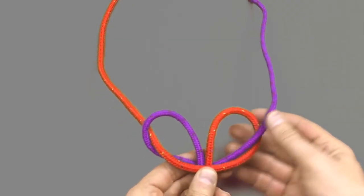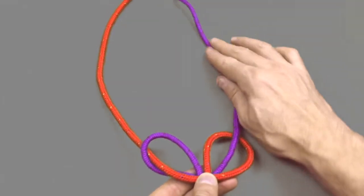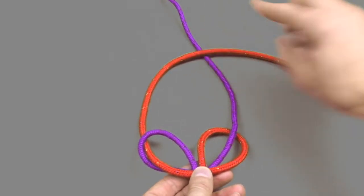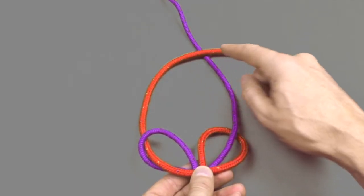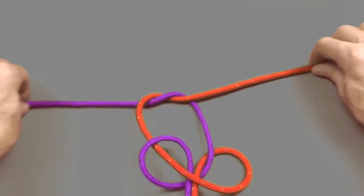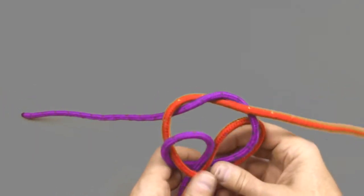So now that we've completed the wall knot it's time to put the first crown knot in. We'll start by taking the purple line and putting the red one over the top of it. We then take the purple one under the red one completing the crown knot.